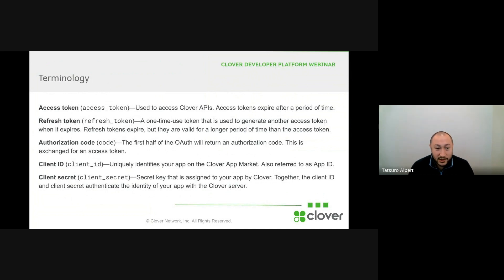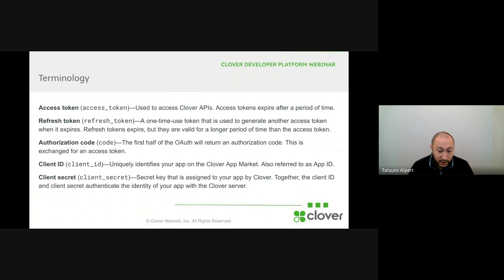Let's go over some terminology just so that we're on the same page. Access tokens are the tokens used to access the Clover APIs. These will now switch to becoming short-lived, and they will expire. A refresh token is a token that you'll use to generate more access tokens, and these will also expire, but they will live for much longer. An authorization code, as you may already know because this is part of the current flow, is a token that you'll receive for the first half of the OAuth process, and you'll use it and exchange it for an access token.